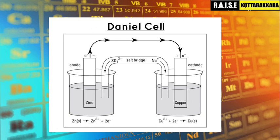At the zinc electrode, electrons flow through the external circuit via the galvanometer to the copper electrode. At the copper electrode, reduction of copper ions occurs — copper 2 plus ions are reduced and deposited on the copper road.